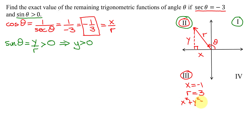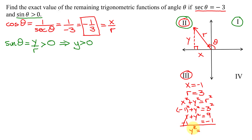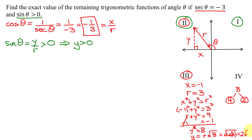Using x² + y² = r²: x is negative 1, so negative 1 squared plus y squared equals 3 squared. That gives 1 plus y squared equals 9. Subtracting 1 from both sides, y squared equals 8. So y equals the positive square root of 8. Factoring 8 as 4 times 2, and since 4 is a perfect square, I write this as the square root of 4 times 2, which is 2 times the square root of 2.